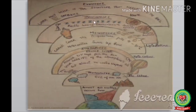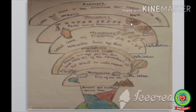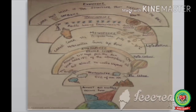Meteorites burn up in the mesosphere. The next layer is the thermosphere, also known as the ionosphere, where radio wave transmission occurs. The electrically charged ions cause sudden lights in the sky — northern lights called aurora borealis and southern lights called aurora australis. After the thermosphere is the exosphere, the uppermost layer that merges into space, with temperatures up to 1600 degrees Celsius.